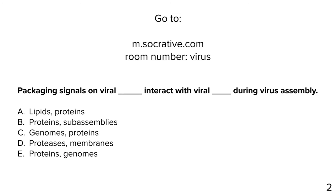Quiz question: packaging signals on viral blank interact with viral blank during virus assembly. Choices: lipids and proteins, proteins and sub-assemblies, genomes and proteins, proteases and membranes, or proteins and genomes. Packaging signals are on genomes and they interact with viral proteins. The answer is C — genomes and proteins. Proteases don't carry packaging signals — we define them as sequences in the genome, not on proteins.